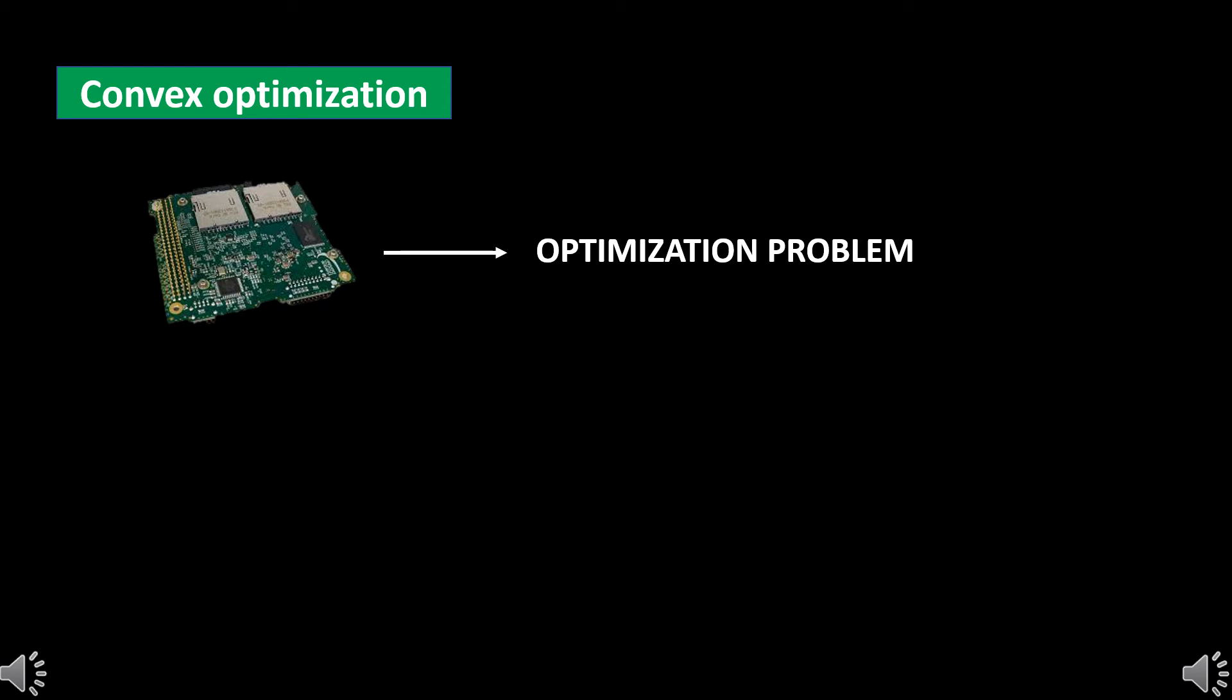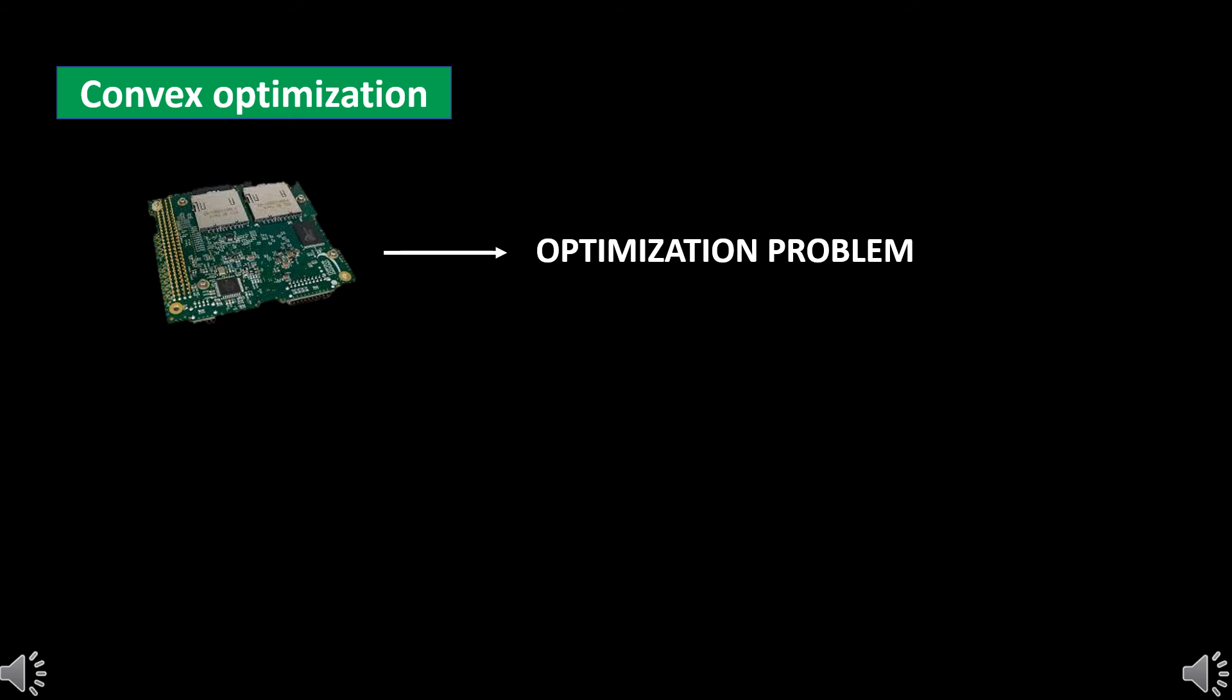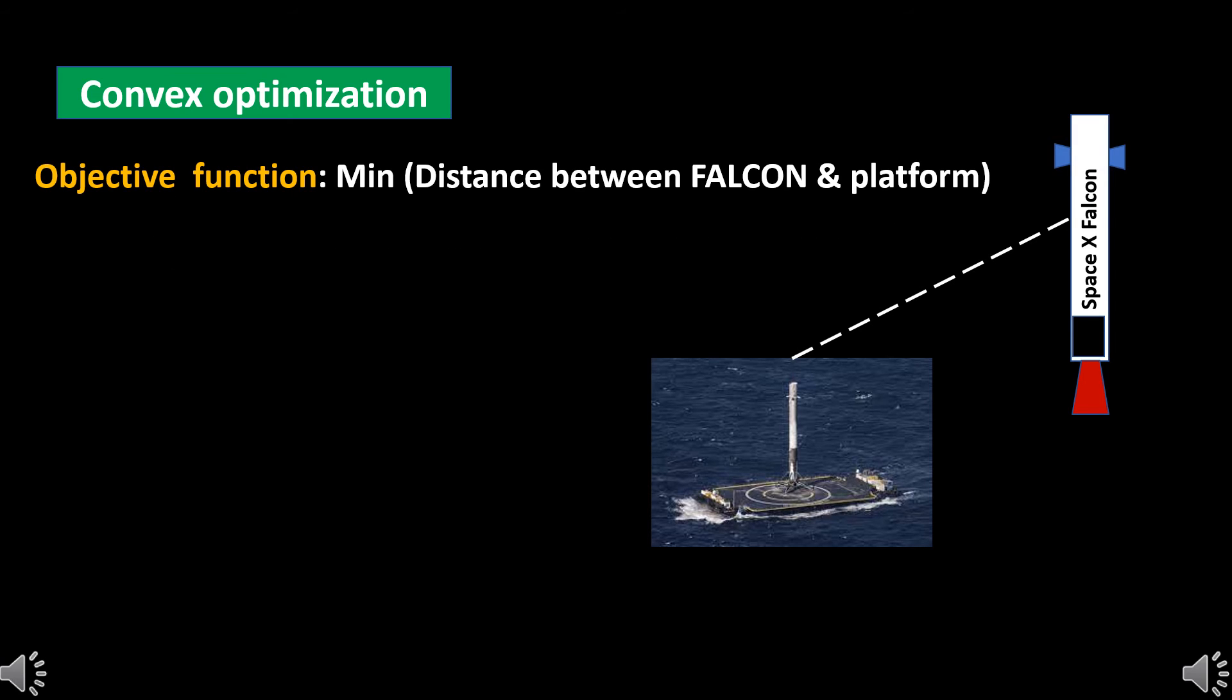The algorithm used in Falcon is the convex optimization algorithm. In simple terms, the onboard computer solves an optimization problem. Any optimization problem will have a function called objective function for which it will find the minima or maxima values. In Falcon's case, the objective function is the distance between the platform and the Falcon. We have to find the shortest distance so minima should be determined.